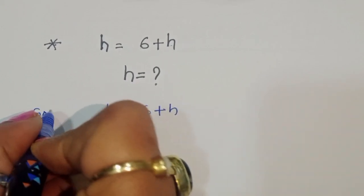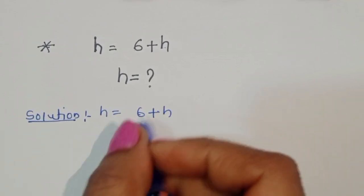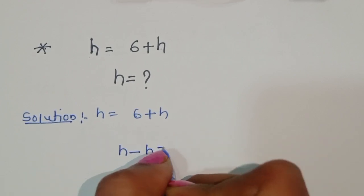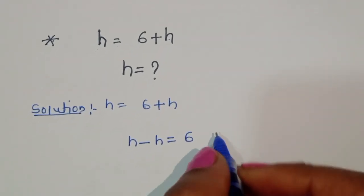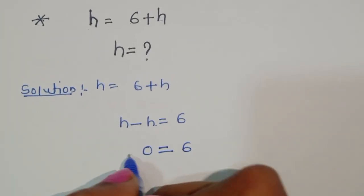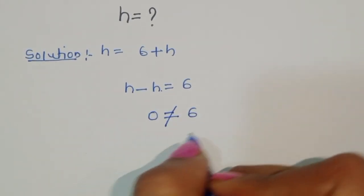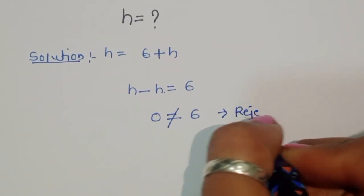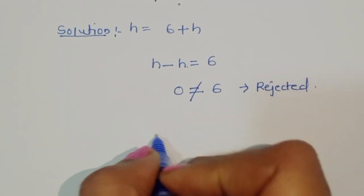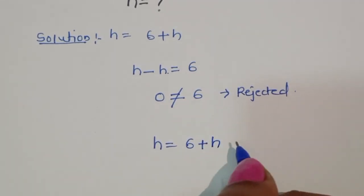We can write h minus √h is equal to 6, so h minus h equals 0, which is equal to 6. But we know that 0 is not equal to 6, so this is rejected. Now we are using a second method.